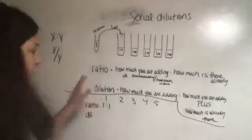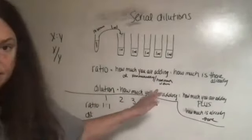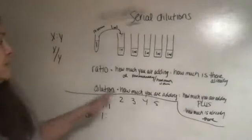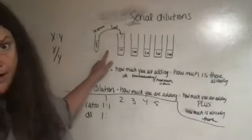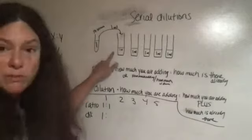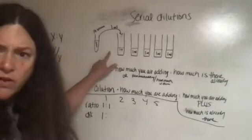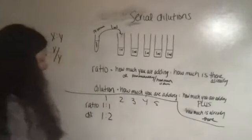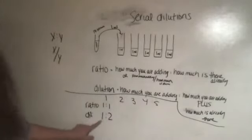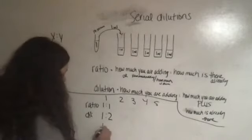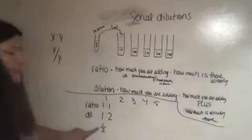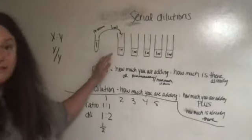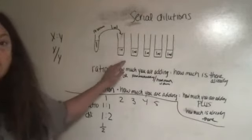My dilution is how much I am adding, I'm adding one milliliter, and then how much I'm adding plus how much is already in there. So I'm adding one milliliter and there's already one milliliter in there. What's my total volume? Two milliliters. So my dilution is one to two. This is saying that half of what is in this tube is serum and half of what is in this tube is saline. That's what the dilutions are saying to you.